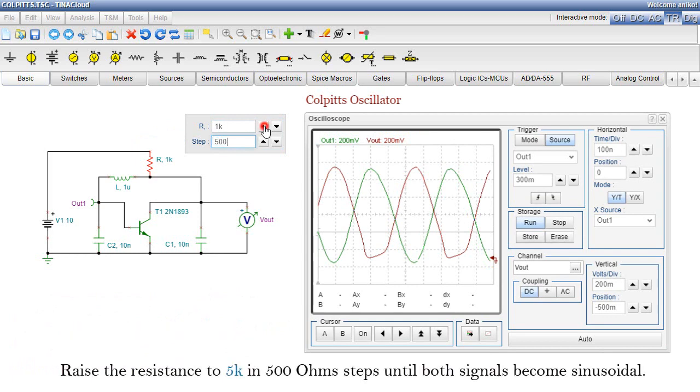Raise the resistance to 5K in 500 ohms steps until both signals become sinusoidal.